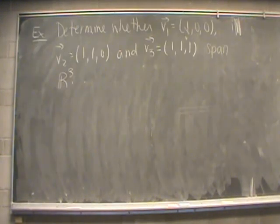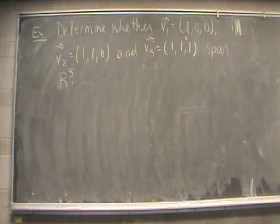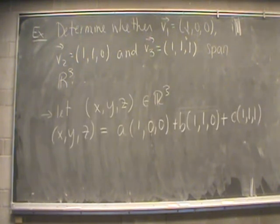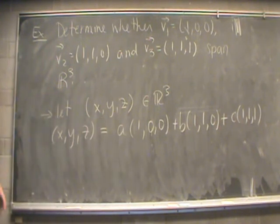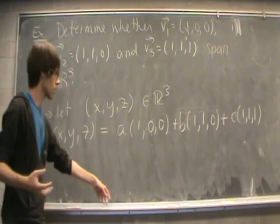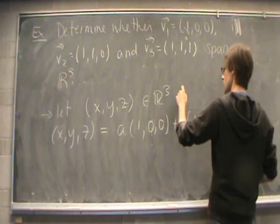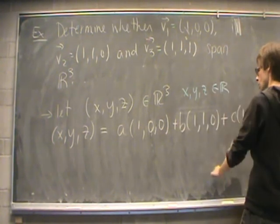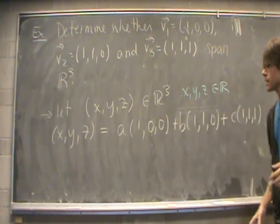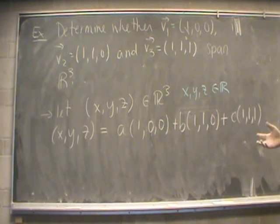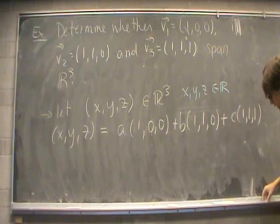The last example determines whether a set of three vectors spans the real vector space R3. To start a span-type question, take a general vector in the space — here (x, y, z) with x, y, z real numbers. We assume these three vectors do span, so we write the general vector as a linear combination a·v1 + b·v2 + c·v3 where a, b, c are real numbers, and sum them together.